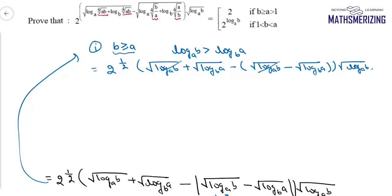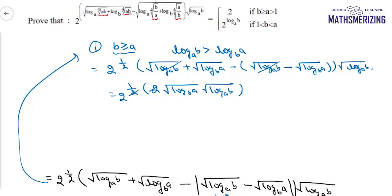These terms cancel, leaving 2^(1/2) times 2 times √(log a base b) times √(log b base a). Since log a base b times log b base a equals 1, I get the answer as 2. So if b is greater than a, the answer to this question is 2.